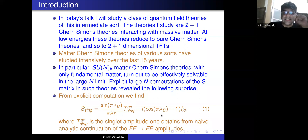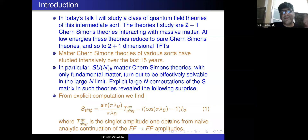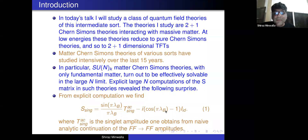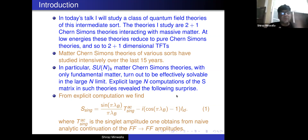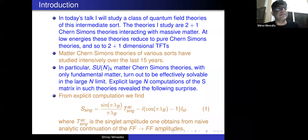Puzzle number two: the identity piece — the forward scattering delta function — was also modified. Instead of appearing with coefficient one, it appeared with a factor that differed from one by cos(πλ) − 1. So effectively, that coefficient was renormalized to cos(πλ). Explicit computations found these two puzzles, suggesting something interesting is going on. By the end of this talk, I will try to explain this data.